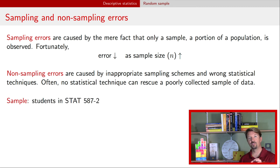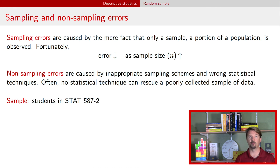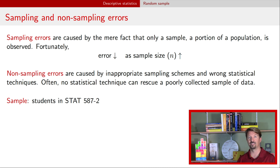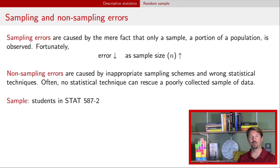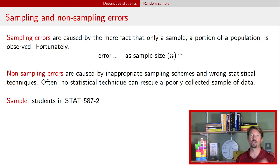In our previous example, using students in Stat 587 would be an example of a non-sampling error — not just because we have a sample, but because that sample itself is biased toward engineering students. That's the first part of this video. There's a second video where we start talking about statistics and estimators of population parameters. Hope to catch you there.